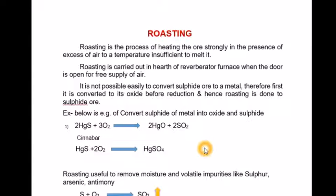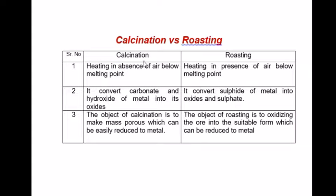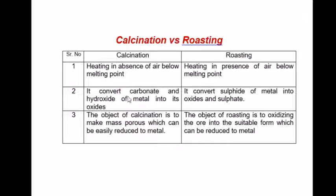Now let's see the difference between calcination and roasting. In calcination, you are heating the ore in absence of air below its melting point. In roasting, it is the process of heating the ore in presence of air below its melting point. In calcination, it converts carbonate and hydroxide ores of metal into their oxide form, whereas in roasting it converts sulphide ores of metal into their oxide and sulphate forms.